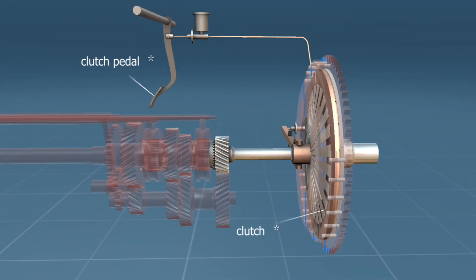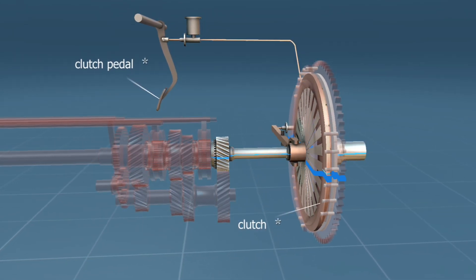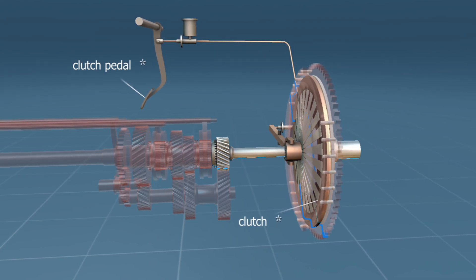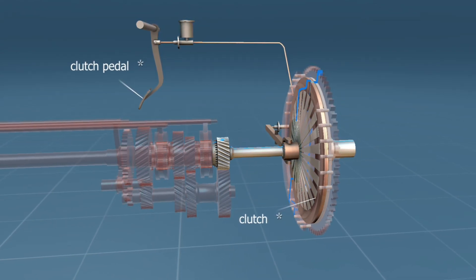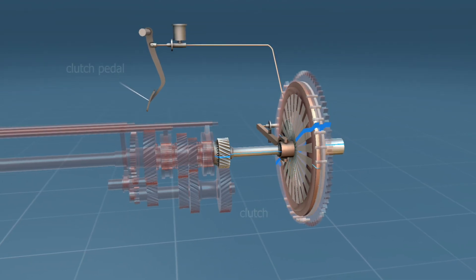With the clutch pedal released, the engine drives the input shaft, and thus the wheels. With the clutch pedal pressed down, the crankshaft revolves without driving the transmission and the wheels. This enables us to shift gears.